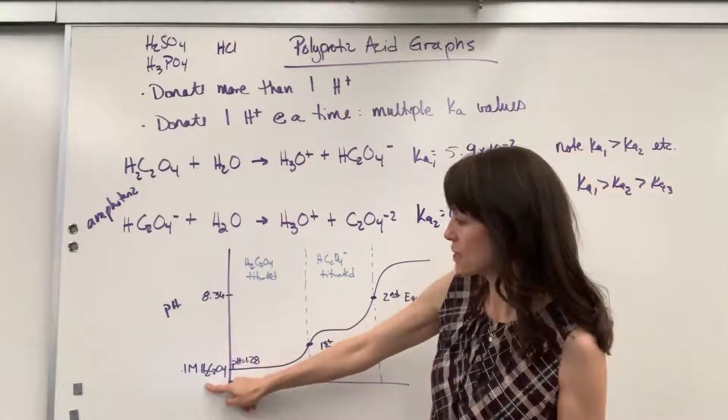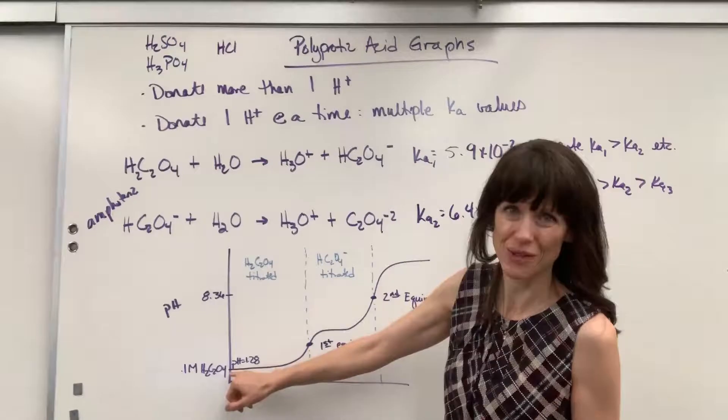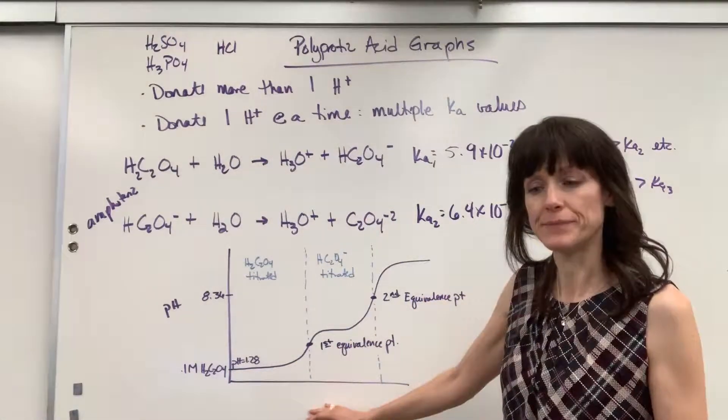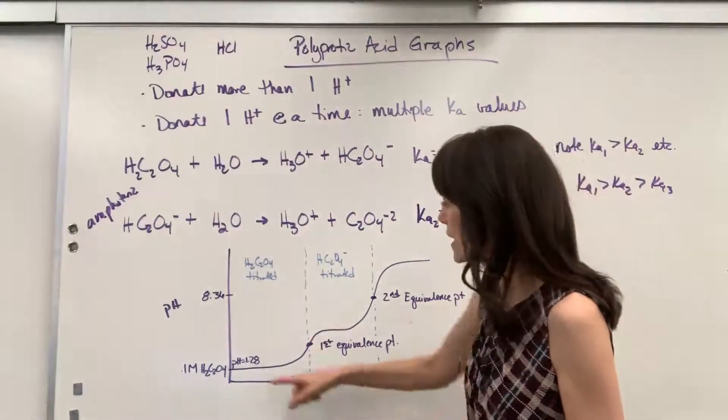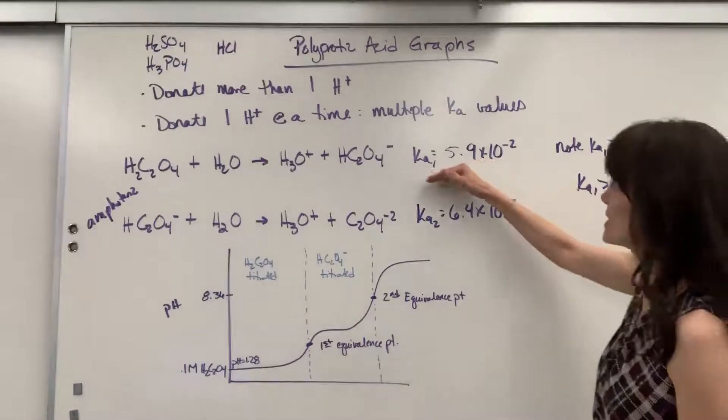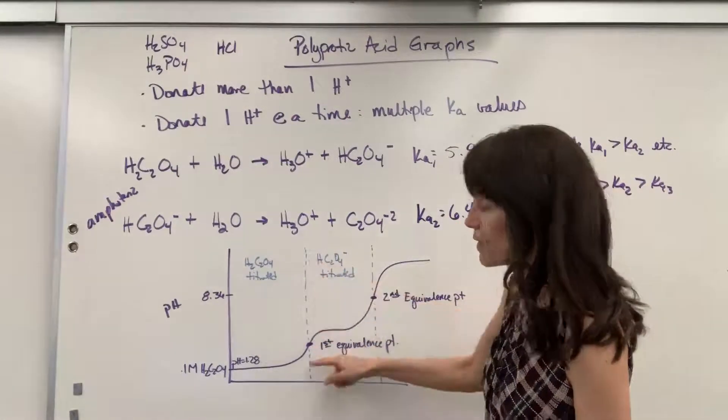We have our oxalic acid, 0.1 molar, that we begin with, and that initial pH will be 1.28. We go ahead and begin adding a strong base to this as we're titrating it. And its first equivalence point, which is equivalent to this right here, that Ka1, happens right here.